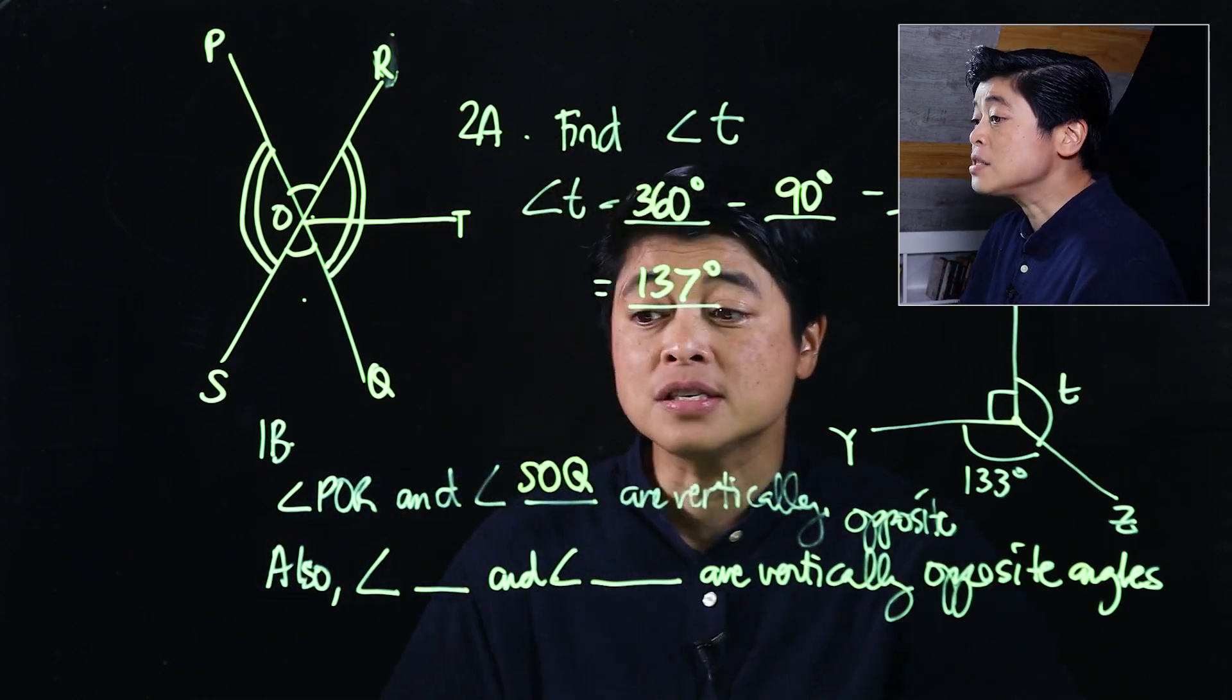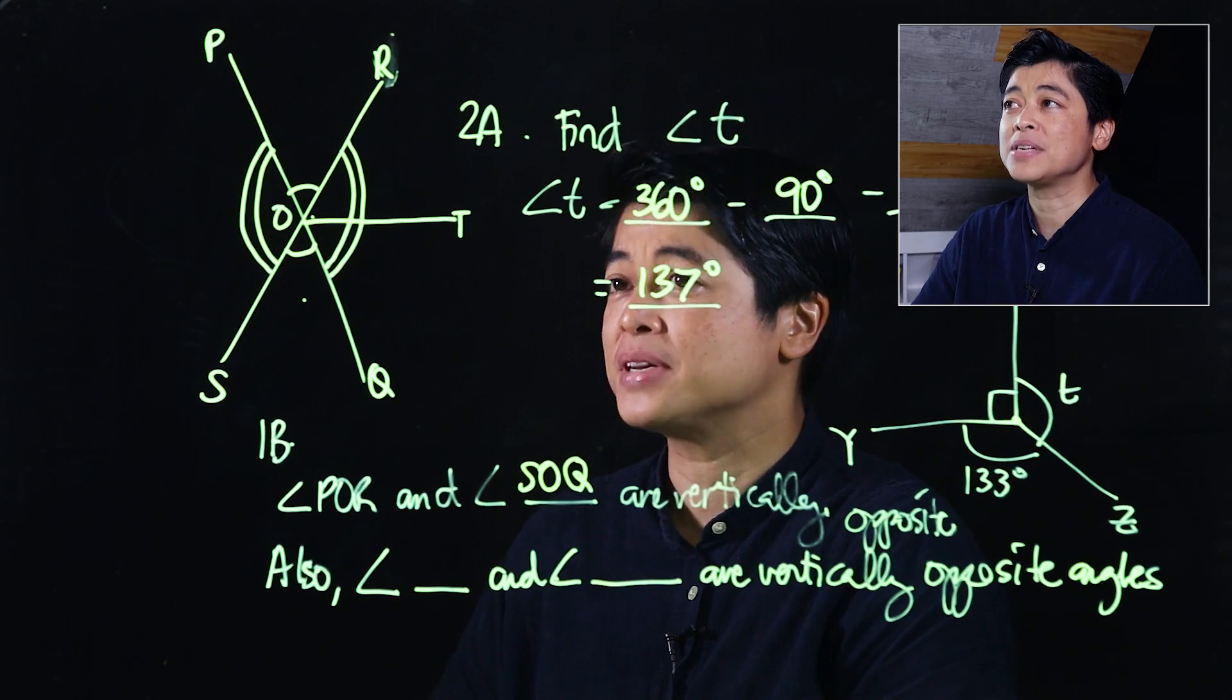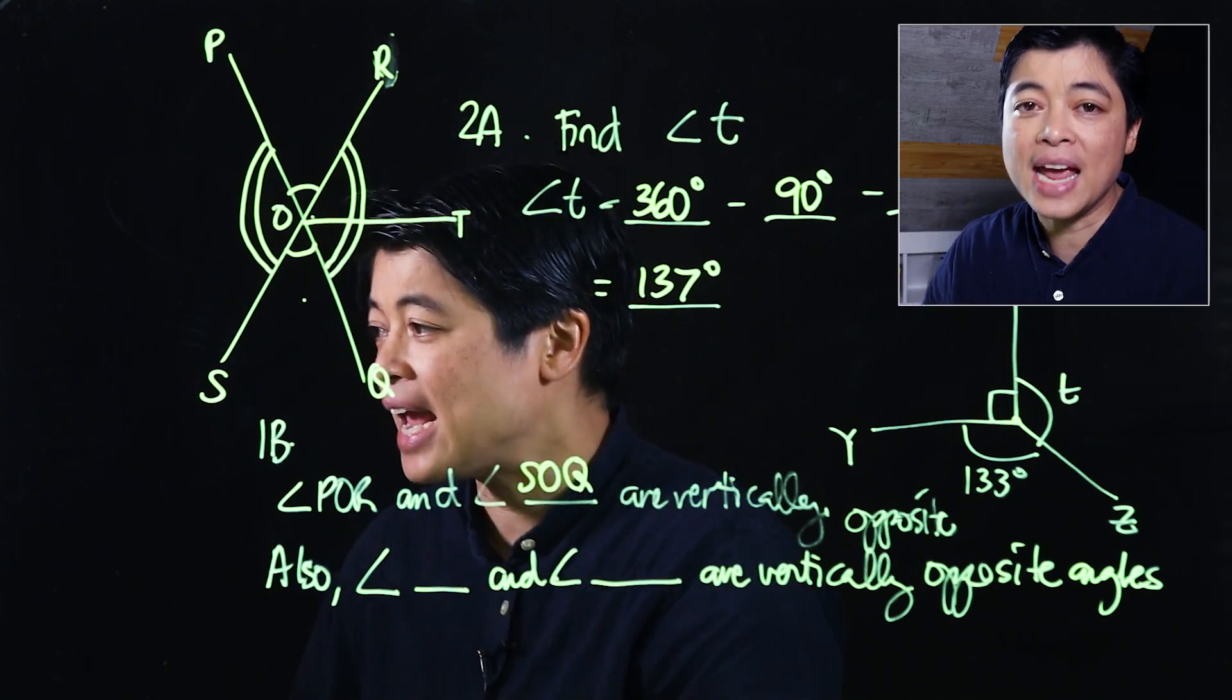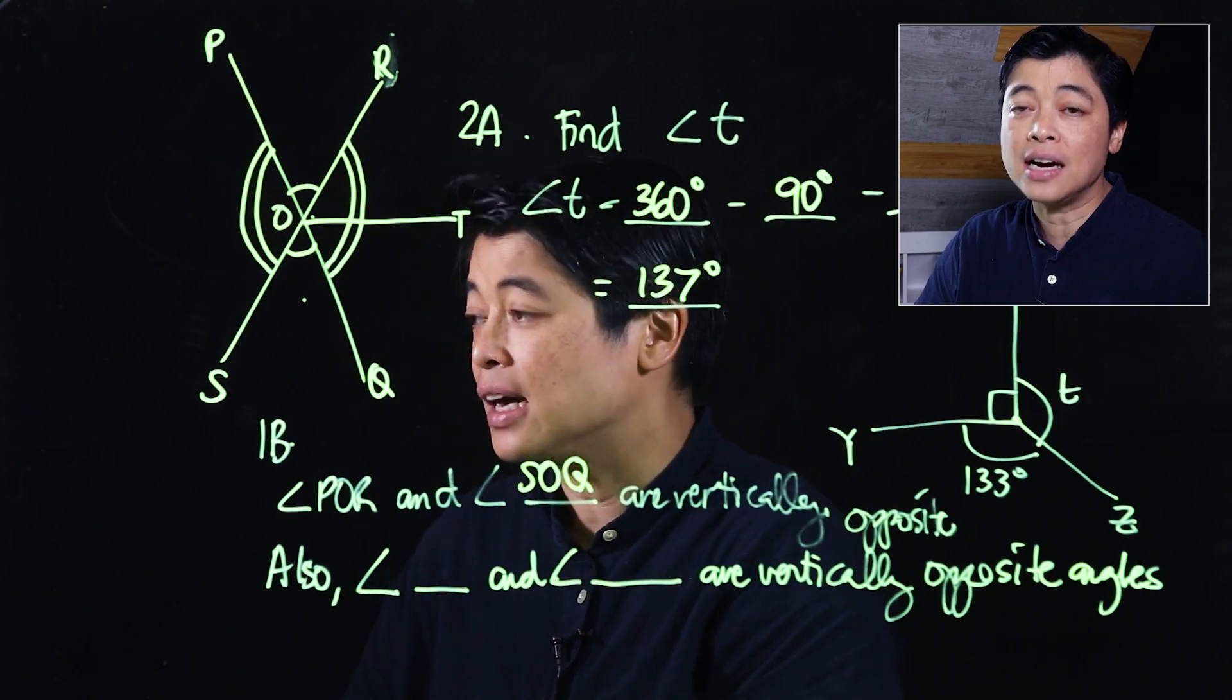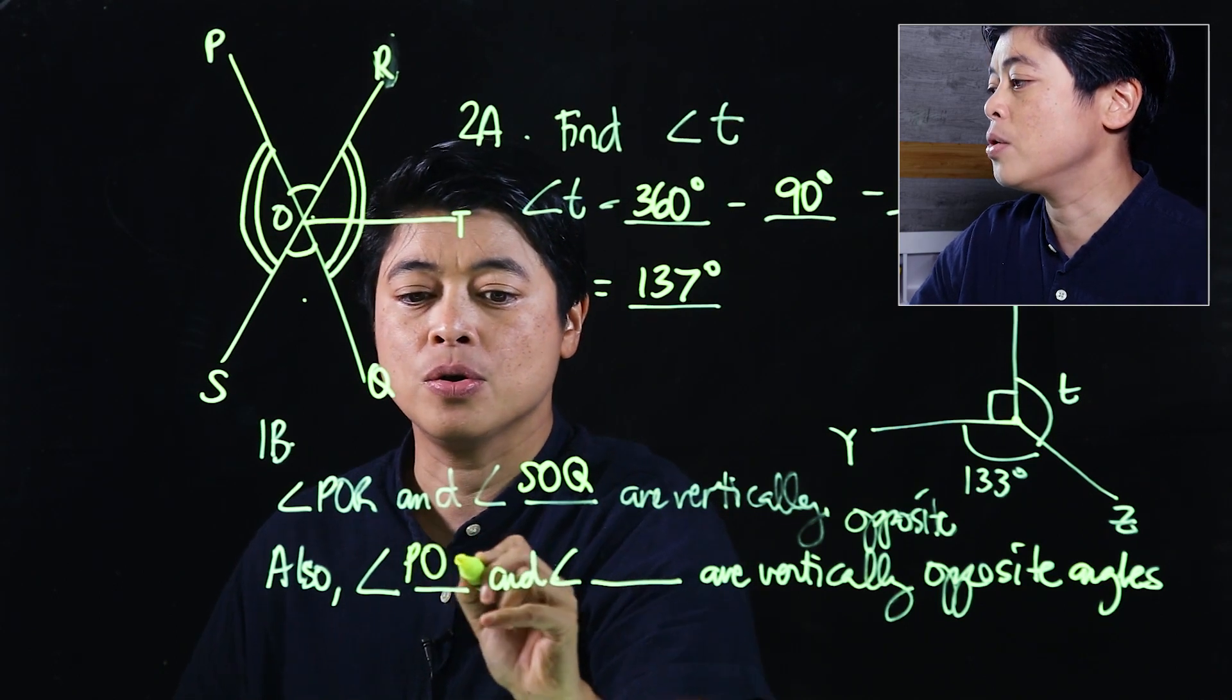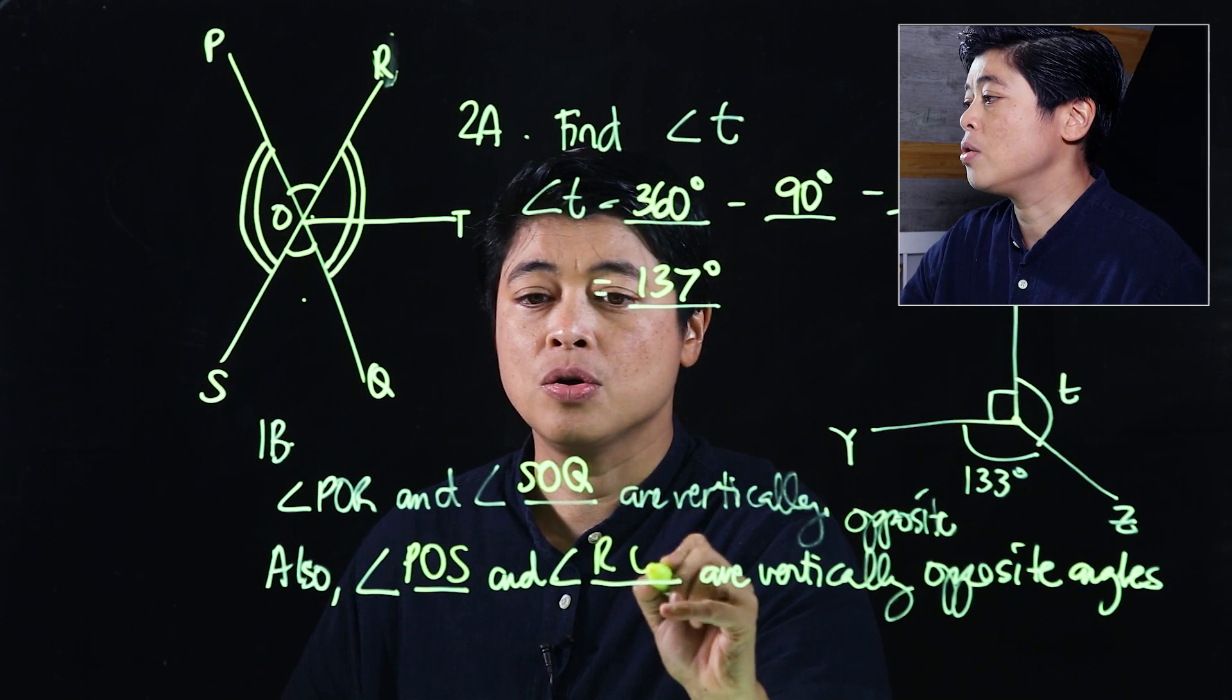Also it says blank and blank are vertically opposite. The vertically opposite are the bigger ones, so even if there's a line there, it doesn't create an angle that will allow opposite angles. Therefore, the two angles that are vertically opposite would be POS and ROQ.